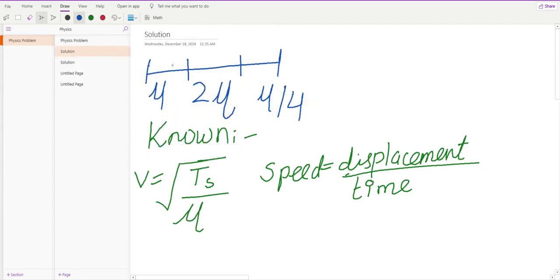Imagine this is my string, divided into three equal parts: first one is mu, second one is two mu, and my third segment is mu over four. My third segment is attached to a wall just like it says in the question. From my formula sheet I will quickly write down all my known values.